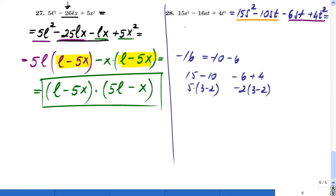And this gives me 15s squared minus 10st, common factor 5s, right. If you divide 15s squared by 5s, you will have 3s minus, 10st divided by 5s is going to be 2t.